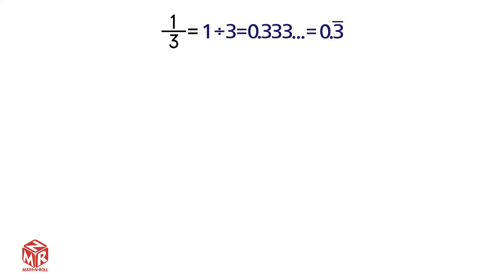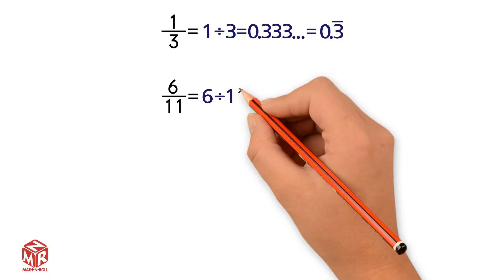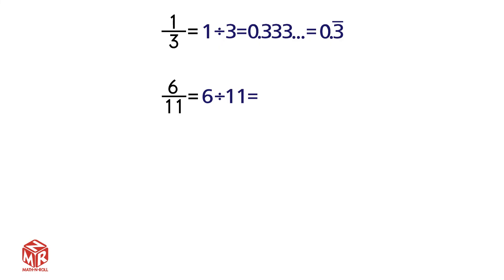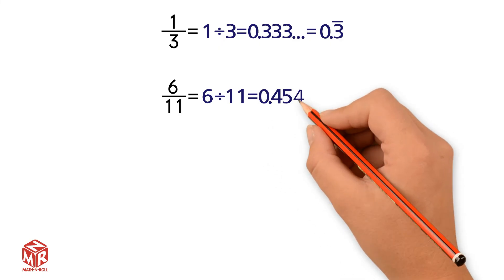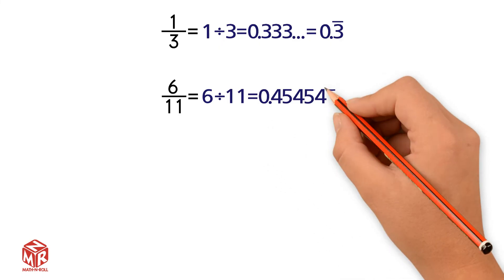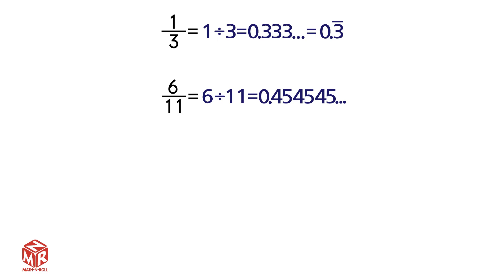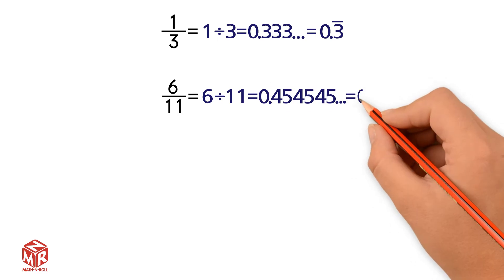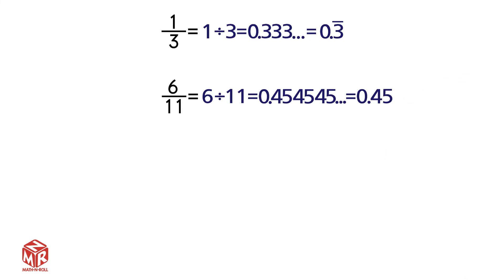Another interesting example is 6 over 11. This is also a repeating decimal. If you divide 6 by 11, you get 0.454545 and so on. In this case, 2 digits repeat, so we write the repeating bar above 45.